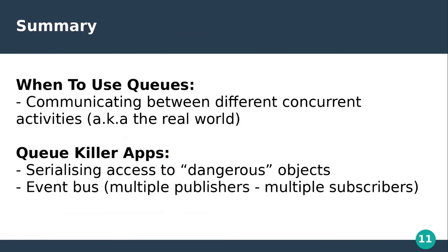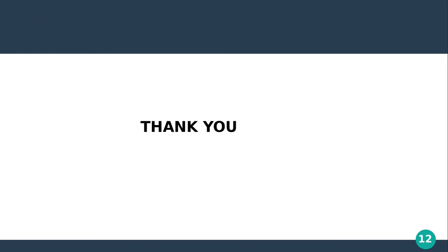So that's basically what I wanted to talk about with queues. In summary, queues are really general purpose — you can use them for lots of different things, mainly communicating between different concurrent activities, which is basically how the real world works. The two main killer apps I want you to remember from this talk are: serialising access to dangerous objects, and using queues to implement event bus architecture — that many-to-many architecture where you've got multiple publishers and multiple subscribers. So that's about it. Thank you.